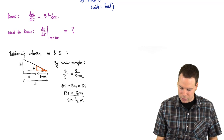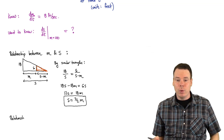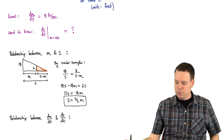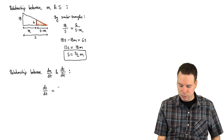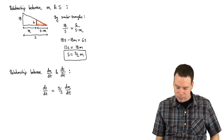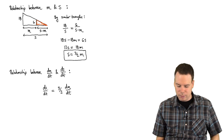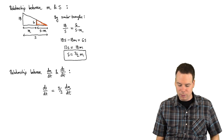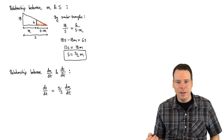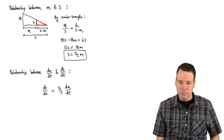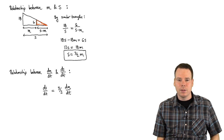There's our relationship between the quantities. Now we differentiate through to get the relationship between the rates of change: ds/dt = (3/2)(dm/dt). This is interesting — it tells us that the rate of change in the position of the shadow is directly proportional to the rate of change in the position of the man. The shadow tip velocity is a constant multiple — 3/2 — of the man's velocity, regardless of the man's position.